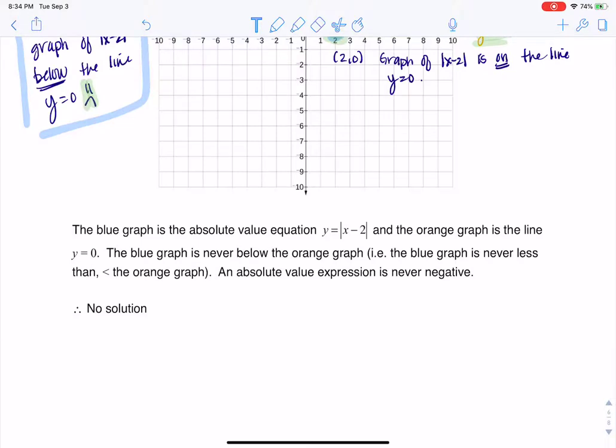Which is why when you come down here, you see me saying, hey, there's no solution. Because there was never a time where the graph of the absolute value function, X minus 2, went below the line Y equals 0.